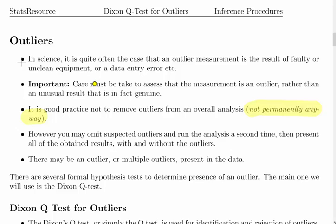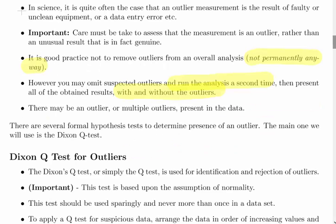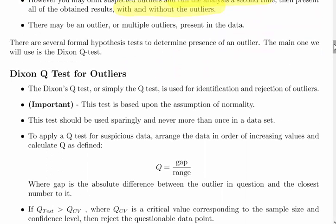What you might do is re-run the analysis a second time and then present all the obtained results with or without the outliers. There may be one outlier or multiple outliers presented in data. The Dixon Q test, I have to admit, is a very simplistic test for doing this. There are more elaborate ones, but this is a very good way of getting used to critical values.